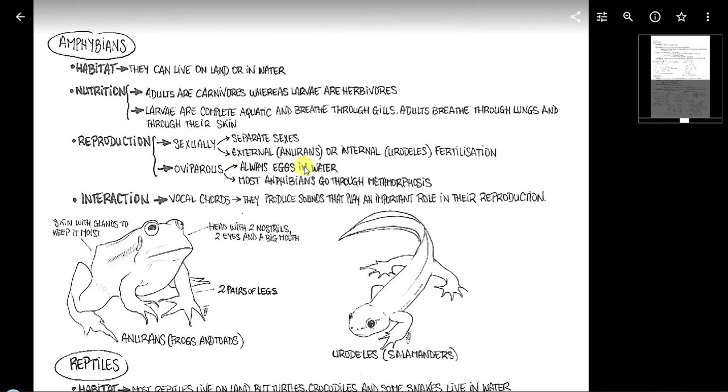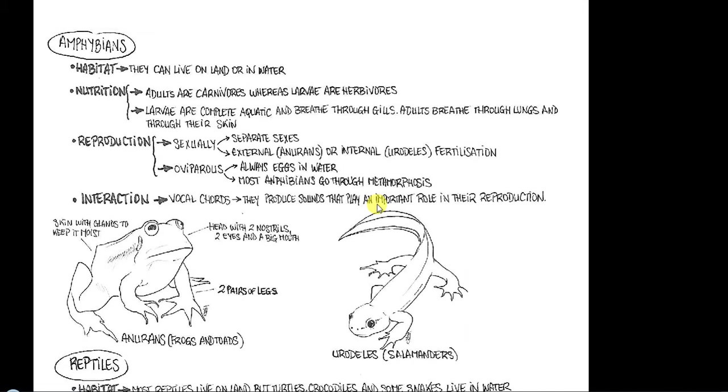Son ovíparos, siempre ponen huevos en agua o cerca del agua, y muchos de los anfibios sufren metamorfosis, como por ejemplo las ranas, que sabemos que pasan por el estadio de renacuajo, en inglés se dice tadpole, hasta llegar a la rana adulta. Y después tienen una curiosidad, sobre todo las ranas y los sapos tienen cuerdas vocales. Esto es muy importante porque en machos es la forma, y en hembras algunas especies también, es la forma que ellos tienen de decir, estoy aquí, en la época de celos y de cría, para buscarse y reproducirse, perpetuar la especie.